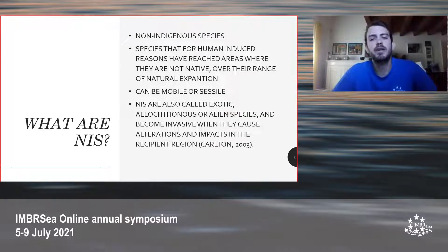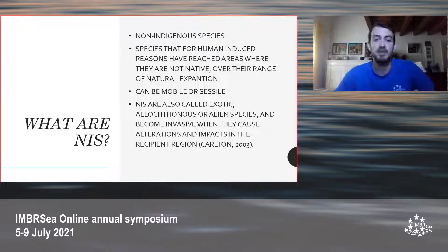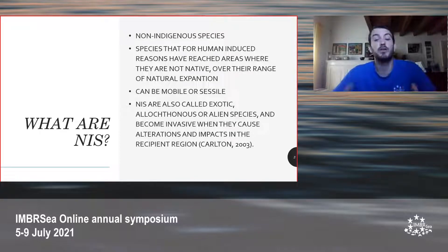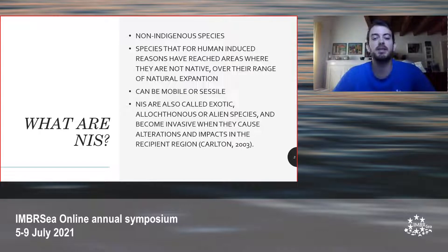Species in an area can be defined in three ways: native, the endemic species of the area; NIS, that are non-indigenous species — species that for human-induced reasons have reached areas where they are not native, beyond the range of natural expansion. They are also called exotic or alien species, and they can become invasive when they cause alteration or any type of impact in the recipient region.